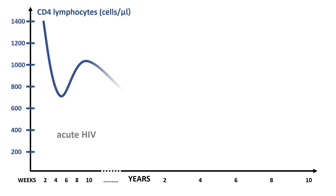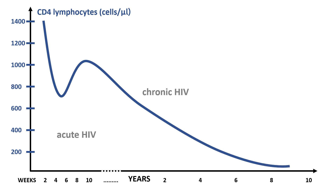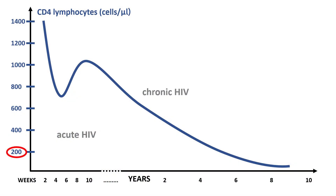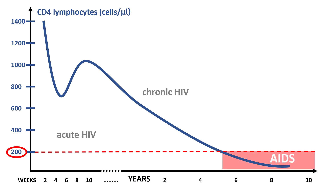A normal CD4 lymphocyte count in a healthy individual is anywhere between 700 to 1,500 cells per cubic millimeter. The trouble is that over this chronic stage of infection, there aren't many symptoms to alert you to the fact that your patient is infected — until the virus reduces CD4 lymphocytes to about 200 cells per cubic millimeter. As it approaches this threshold of 200, opportunistic infections and malignancies become increasingly common. This third stage, once opportunistic infections appear, is called AIDS — Acquired Immunodeficiency Syndrome.